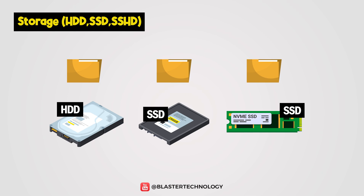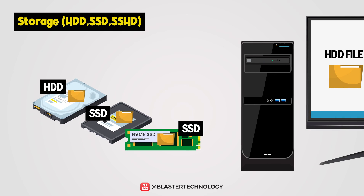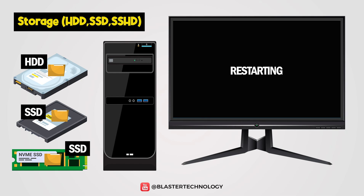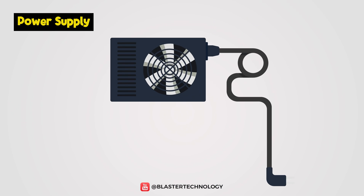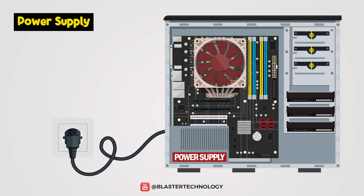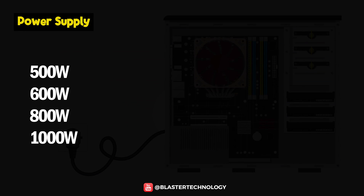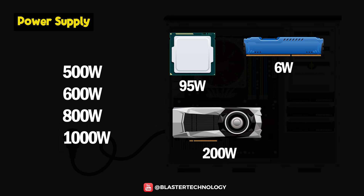These types of memory have the task of storing various information in the computer so that it can be reused even after the computer is physically shut down. Another very important component is the power supply. It is located inside the computer case and provides direct current to all computer components. The capacity of the source must be chosen according to the consumption of all components.